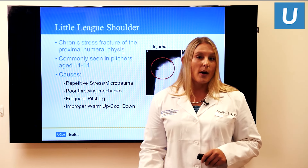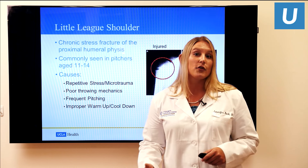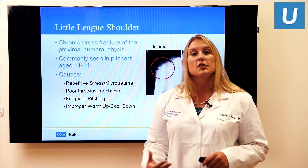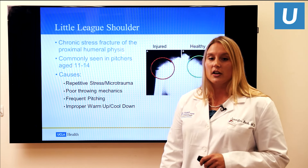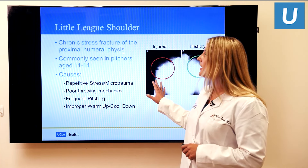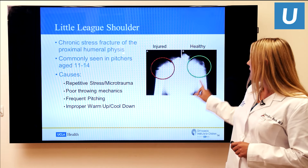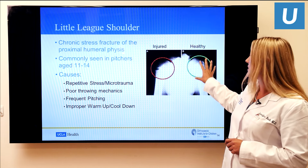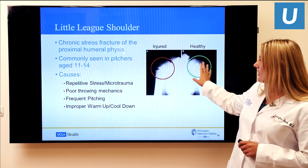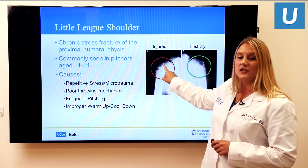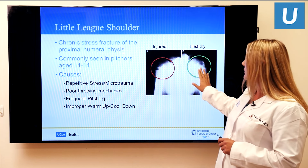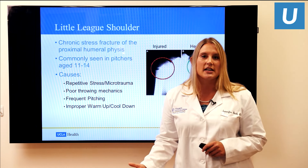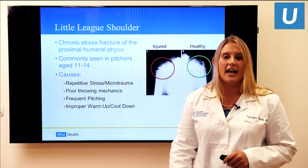Improper throwing mechanics or high frequency of pitching can cause this type of injury, as can improper warm-up and cool-down. In this picture, you can see a comparison of a healthy shoulder to an injured shoulder. The growth plate on the top of the proximal humerus appears very wide and separated in the injured shoulder. Those changes are due to the chronic stresses this growth plate has been seeing over the duration of the athlete's play.